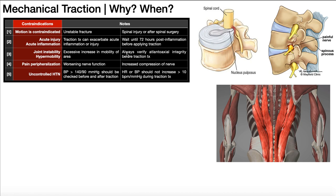If we're doing traction on the cervical spine, we want to verify atlantoaxial integrity beforehand — that's the joint between C1 and C2. This is often damaged or insufficient in patients with rheumatoid arthritis, Marfan syndrome, Down syndrome, or even after a motor vehicle accident. So if you're going to do traction on the cervical spine, run tests like the Sharp-Purser test and a vertebral basilar artery insufficiency screen to make sure everything is okay before applying traction. Also, if there's pain peripheralization during treatment — meaning traction is making the pain spread distally — you must stop. That can cause worsening nerve function and increased compression on the nerve.